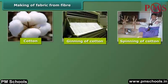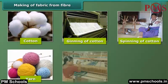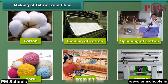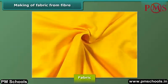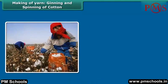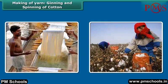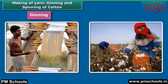How is fabric made from fiber? First, yarn is made from fiber, and then fabric from yarn. To make yarn, cotton is picked by hand from cotton balls and then fiber from the seeds is separated by combing. This is called ginning. Ginning can be done by machines too.